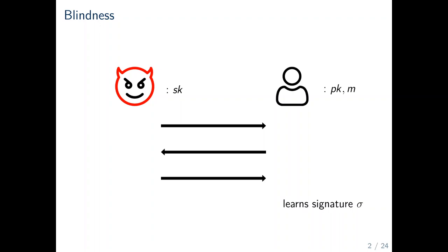the adversary should be blind to which message was used in a specific interaction as well as the produced signature. In the one more enforceability security experiment, also called OMUF,